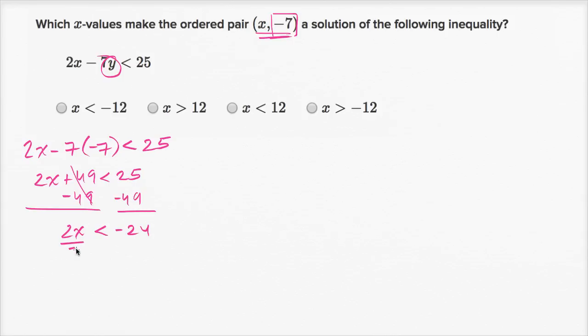Now to isolate the x, we just have to divide both sides by 2. And we're not going to change the inequality since we are multiplying or dividing by a positive value, positive 2. So this is going to be x is less than -12.